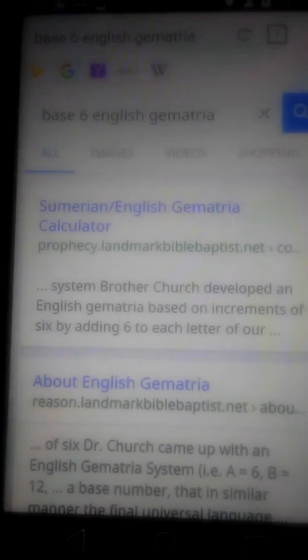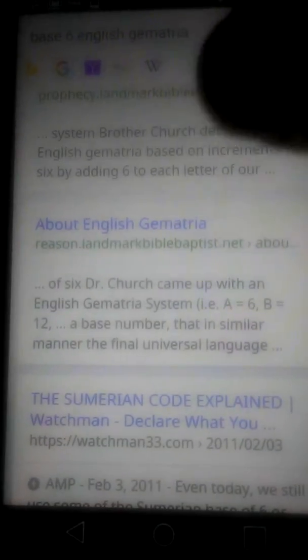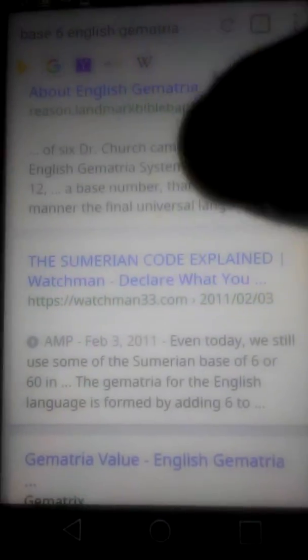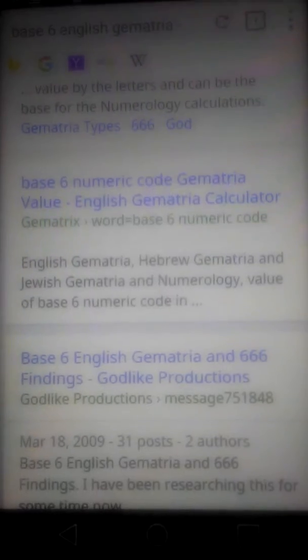I'll show you how using the base 6 English gematria, or the Sumerian English gematria, with the letters of the alphabet being multiplied by six, will show how Barack Obama is no other than the 666.